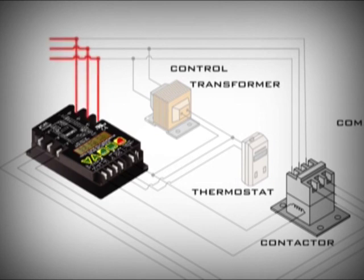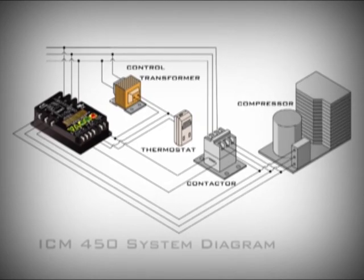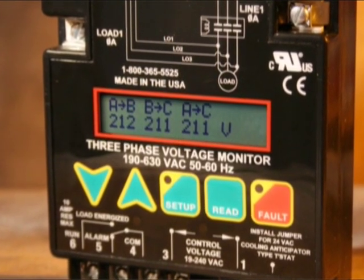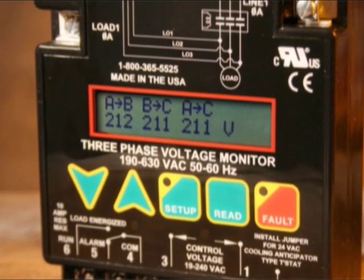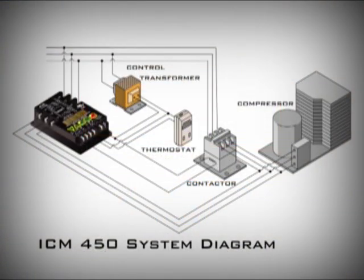At power-up, the ICM 450 checks the incoming power for proper phase sequence, amplitude, and balance. If the power is within the user-adjustable parameters, it then energizes the control circuit to connect the compressor or other load. It continuously monitors the load, and if a fault condition such as an imbalance or high or low voltage occurs, it de-energizes the control circuit to cut off power to the load. The event is also recorded for later review, so the compressor is protected continuously and automatically.